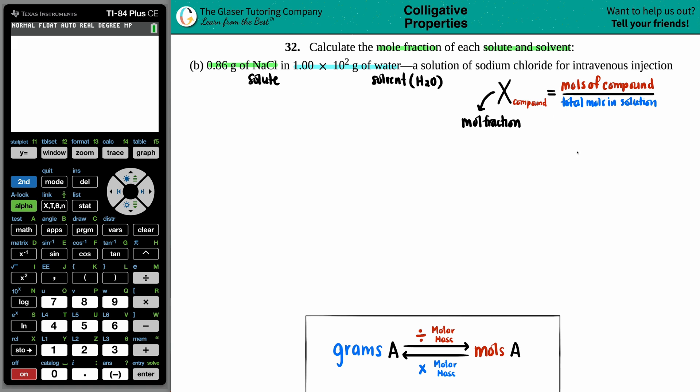But the thing is, we don't have moles yet, we have grams. So the first thing we have to do is take our 0.86 grams of NaCl and convert it into moles of NaCl. And then we have to do the same for the water, because we've got to get everything in moles.